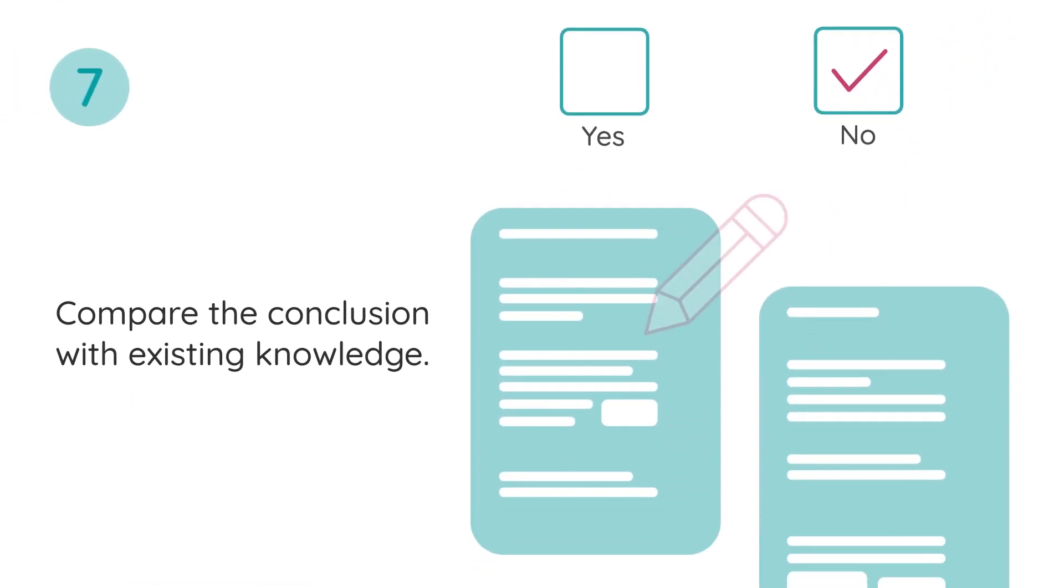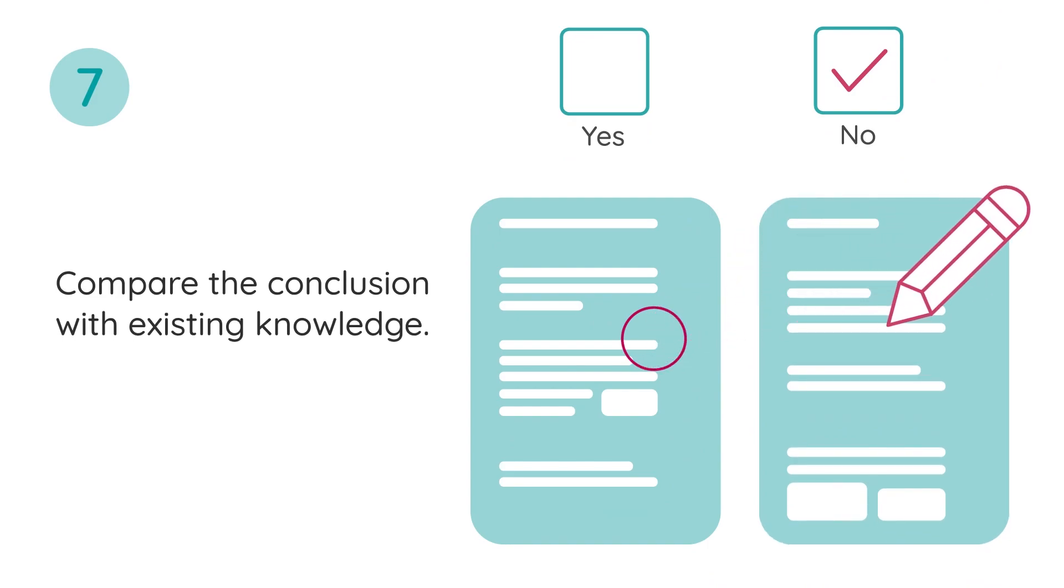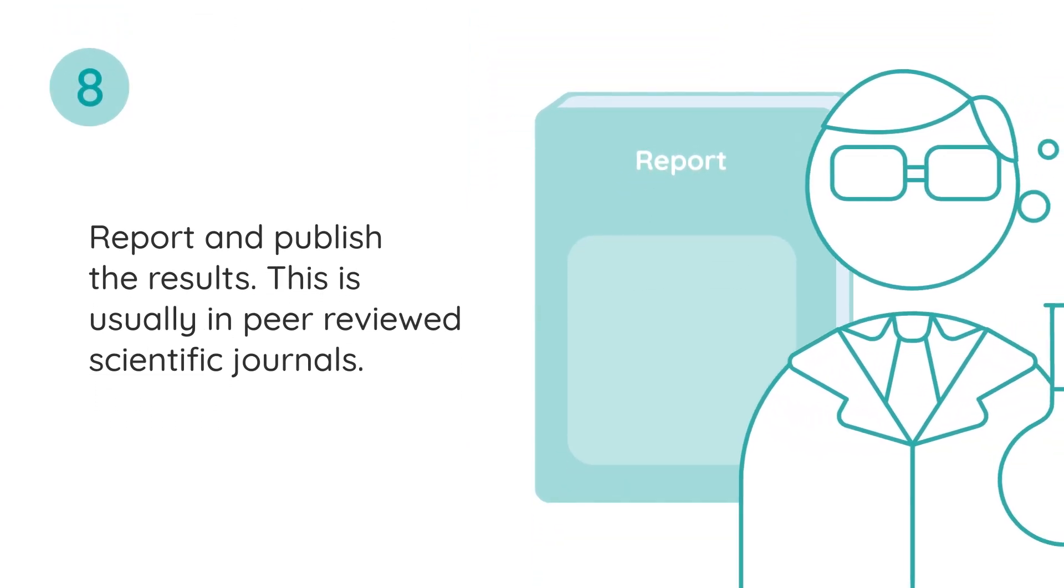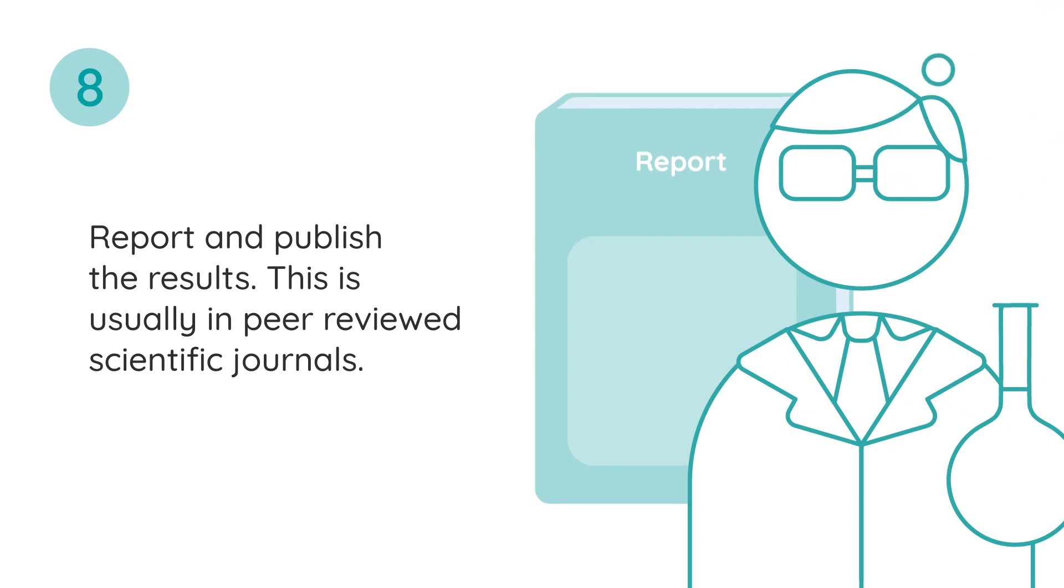The seventh step is comparing the conclusion with existing knowledge. Have we learned something new? And then the eighth step is reporting and publishing the results, usually in peer-reviewed scientific journals, and this is where other scientists would look at your work.